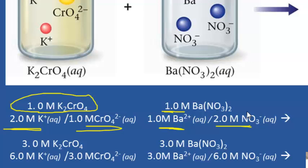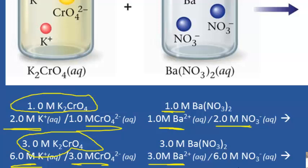We can take this and use it with any concentration. For example, if we had 3.0 molar potassium chromate, the concentration of potassium would be twice as great — so that would be 6 molar potassium — and the concentration of chromate would be the same as the concentration of the solution, so 3 molar chromate. Similarly, if we triple the concentration of barium nitrate, we'd also triple the concentration of barium, but the concentration of nitrate would be twice that.